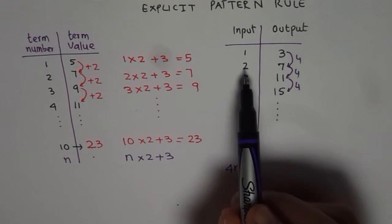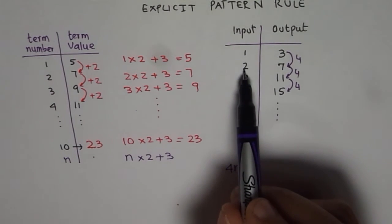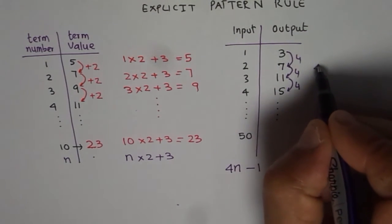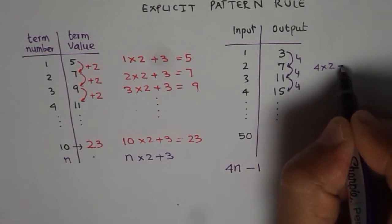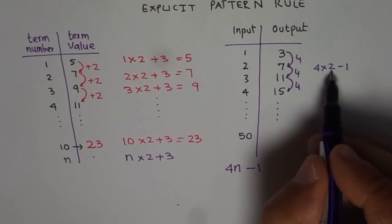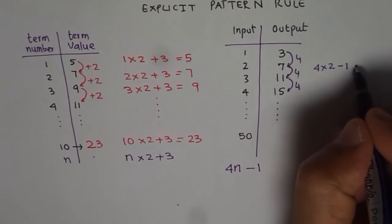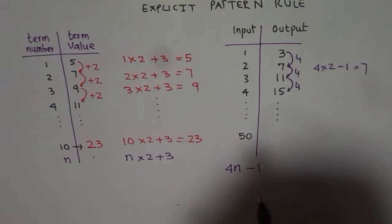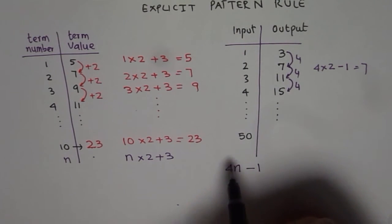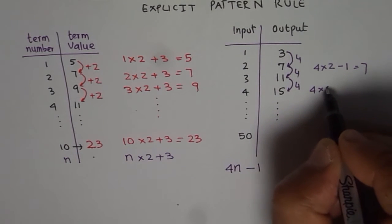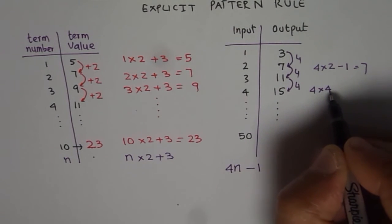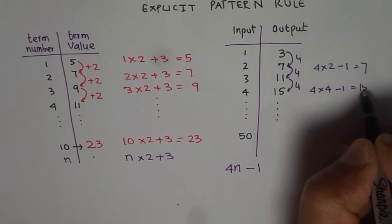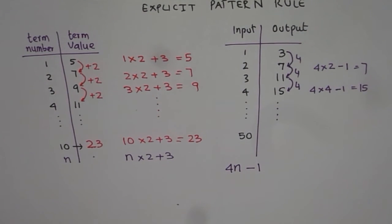Let us try the second one. 4 times 2 is 8. Let us say 4 times 2 and then take away 1. 4 times 2 is 8. 8 take away 1 is indeed 7. It works. Let us try with the number 4. 4 times 4 is 16, right? 16 take away 1 is indeed 15. So it works. So that is my rule.